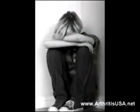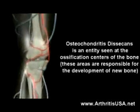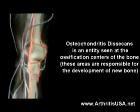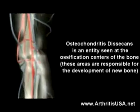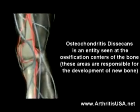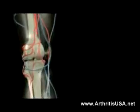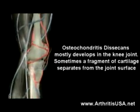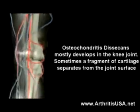This is typically seen in young males. Osteochondrosis desiccans is an entity seen at the ossification centers of the bone. These areas are responsible for the development of new bone. Osteochondrosis desiccans mostly develops in the knee joint.